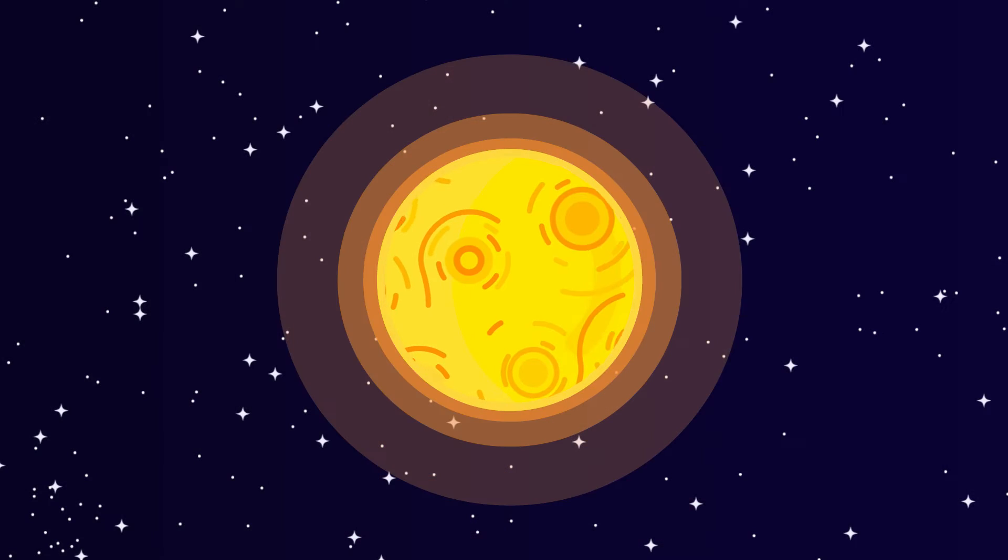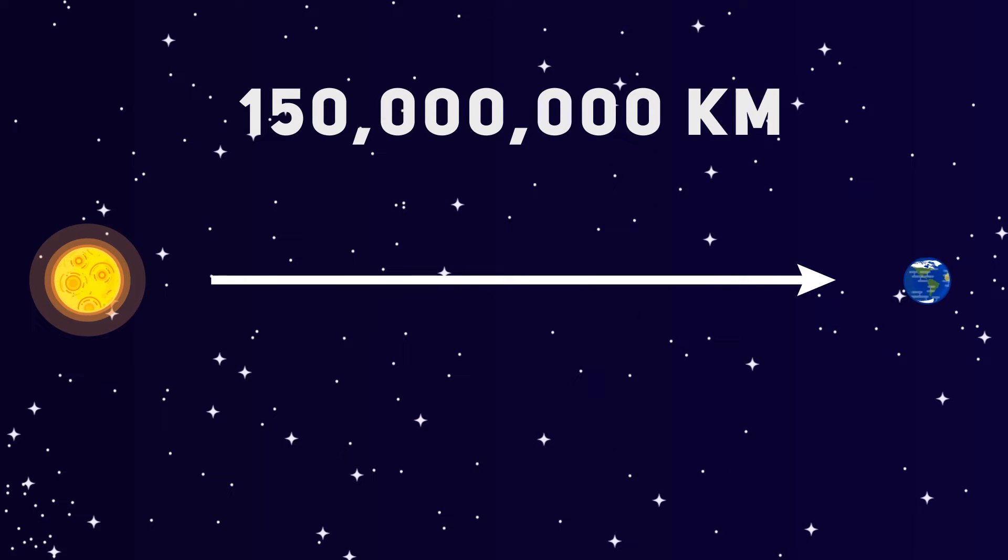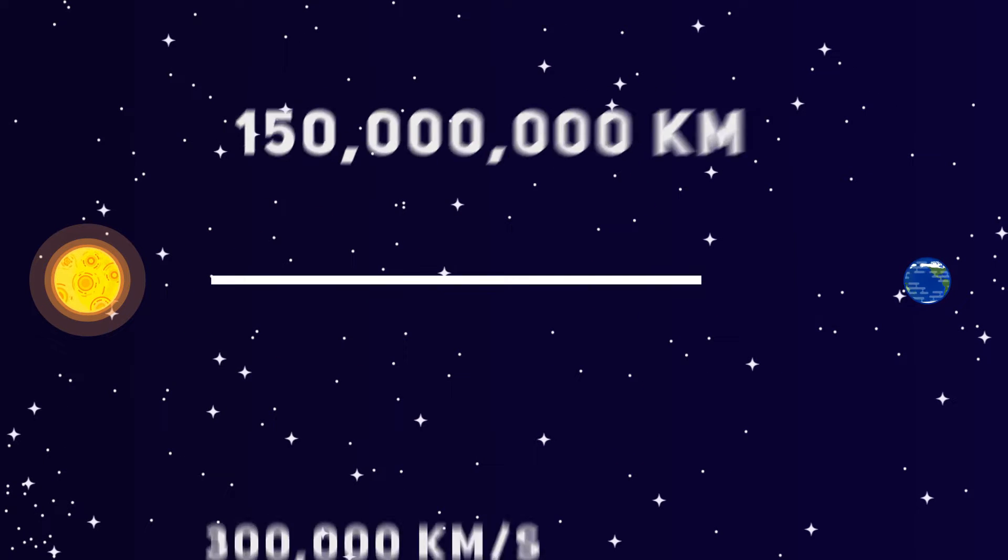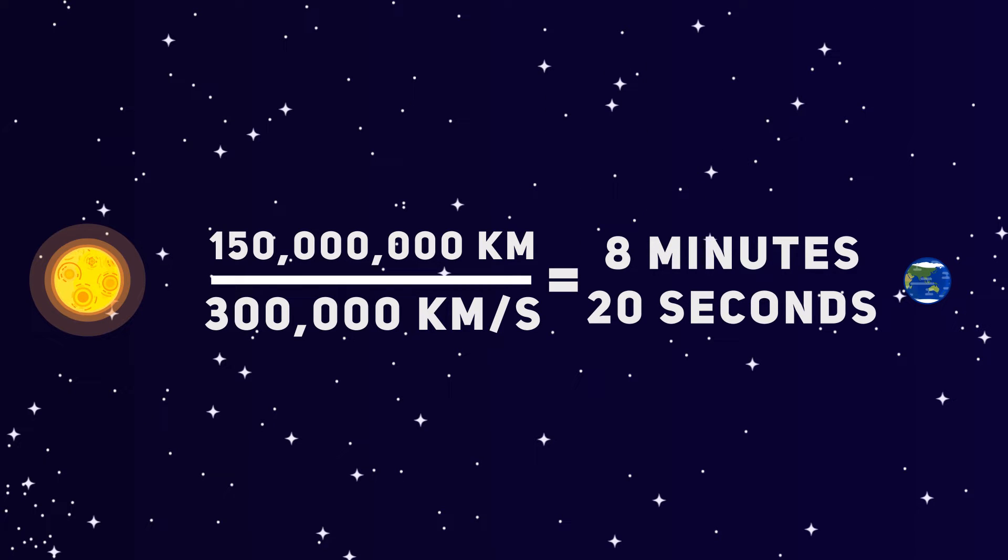How long does sunlight take to reach Earth? Light travels at a constant speed of about 300,000 kilometers per second, and the sun lies at about 150 million kilometers from Earth. So by performing a simple calculation, we can work out that light takes approximately 8 minutes and 20 seconds to reach Earth from the surface of the sun.